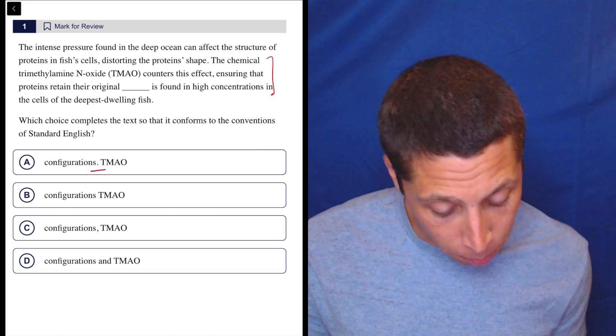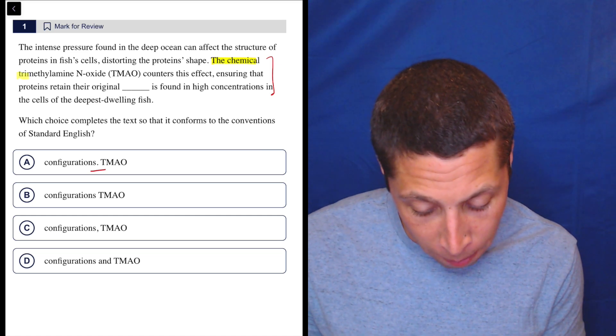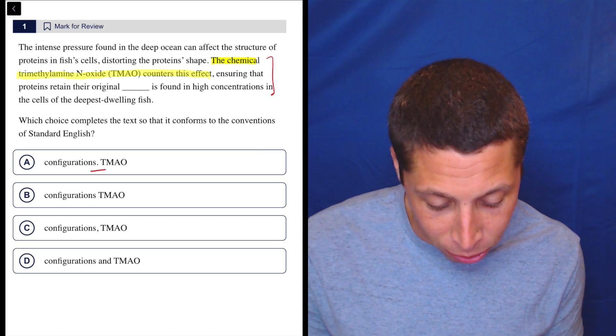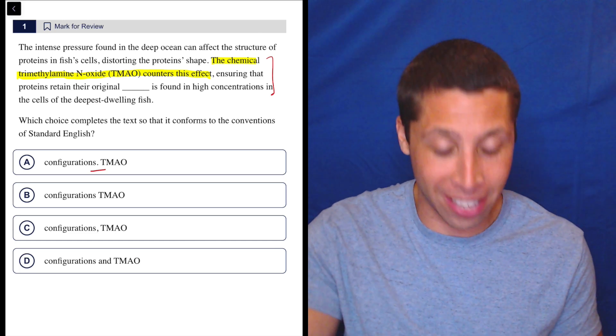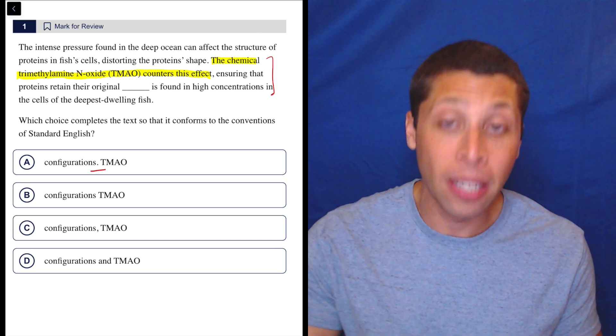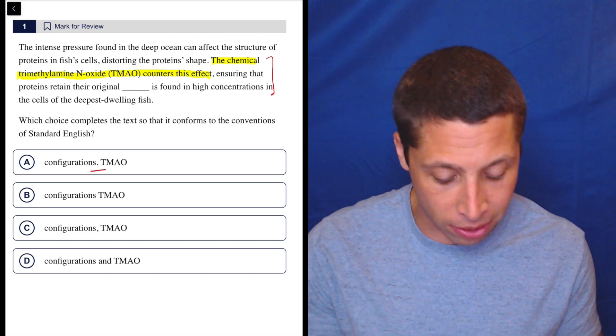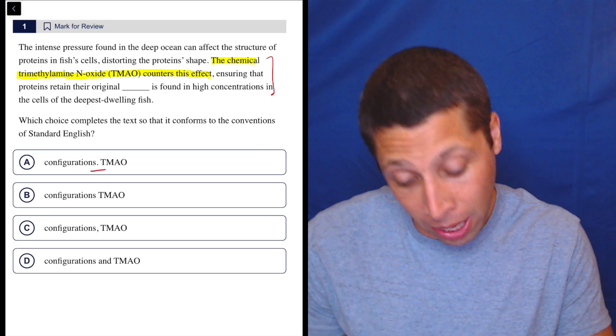Yeah, that sounds like a sentence. Specifically, it's this part. The chemical trimethylamine N-oxide (TMAO) counters this effect. So TMAO counters this effect. That's the sentence. The extra part at the end with that comma is just an extra clause that is giving us some description. So we've got one sentence.